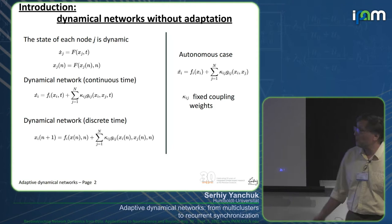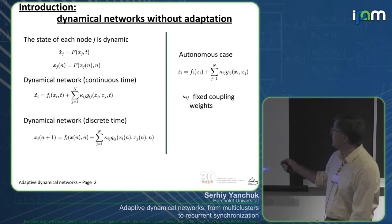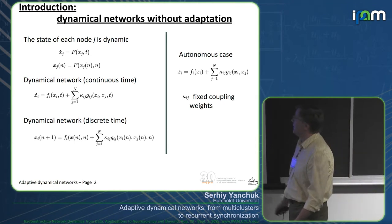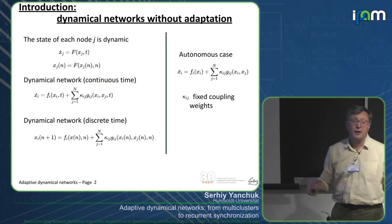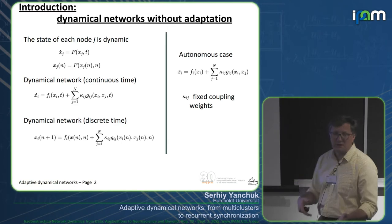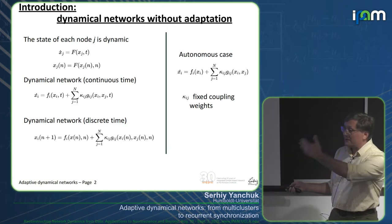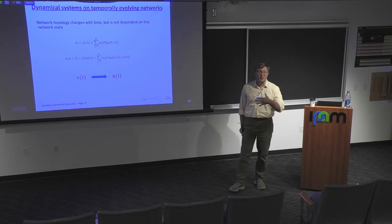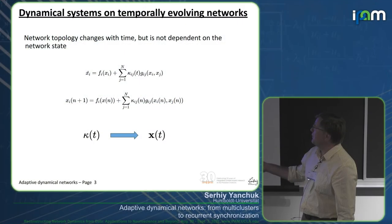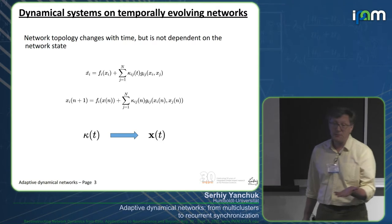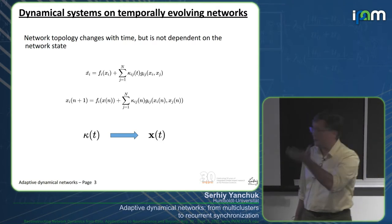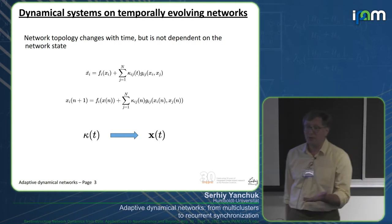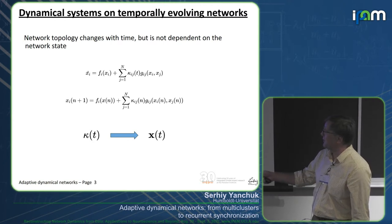Very often we have the autonomous case, when we don't have explicit time in the equations. Usually in dynamical networks we have fixed coupling weights kappa_ij — fixed topology — and on this topology we have dynamics. We look for what kind of synchronization or desynchronization takes place. The next step in modeling is to have a dynamical system on temporally evolving networks, where coupling weights depend on time — zero meaning no connection, non-zero meaning a connection exists.